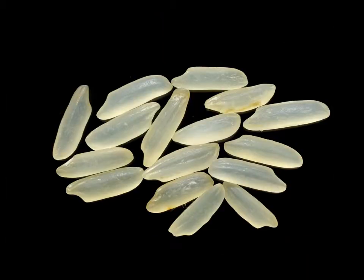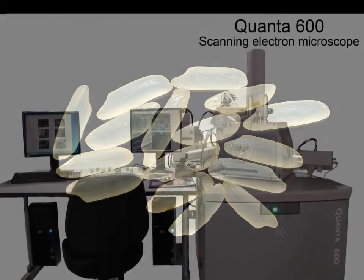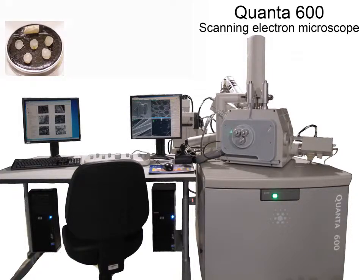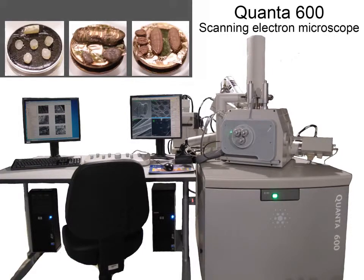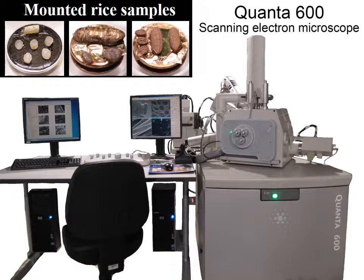Before the rice may be examined in an electron microscope, it has to be thoroughly prepared. Small fragments are mounted on metal stubs and then coated with gold. This treatment ensures that the beam of electrons inside the microscope produces excellent images.